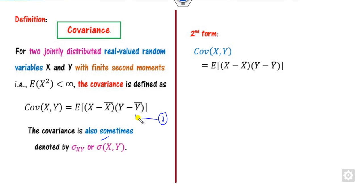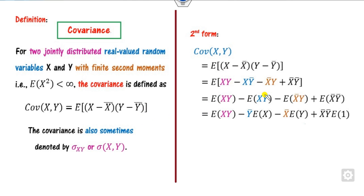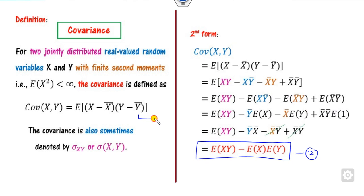There is one more simplified form of the covariance. If you open the bracket, you get a term which simplifies further — since y-bar is a constant value, it can be taken outside. This gives the second form of the covariance. You can use either form to solve problems.